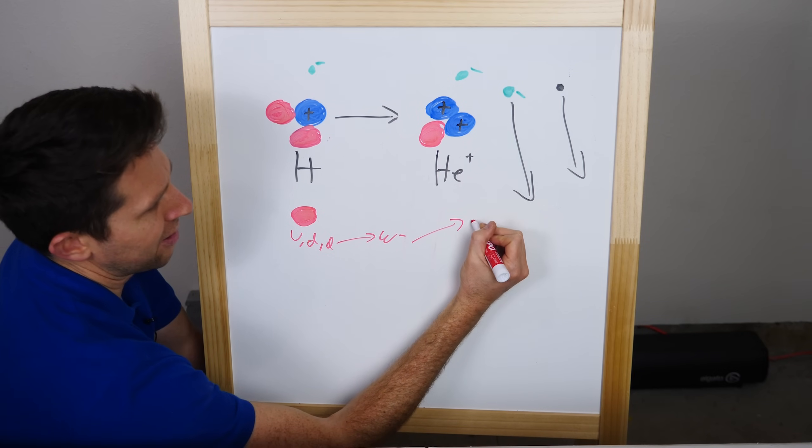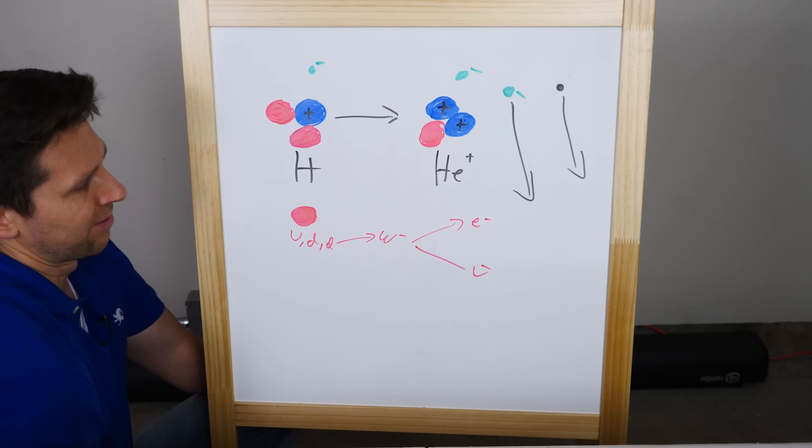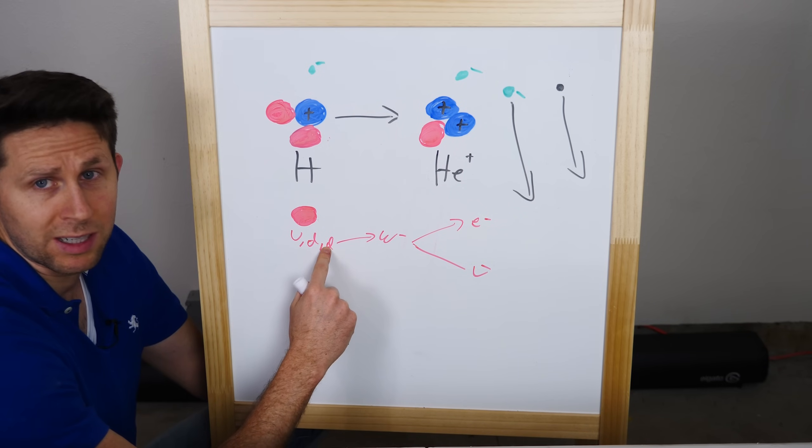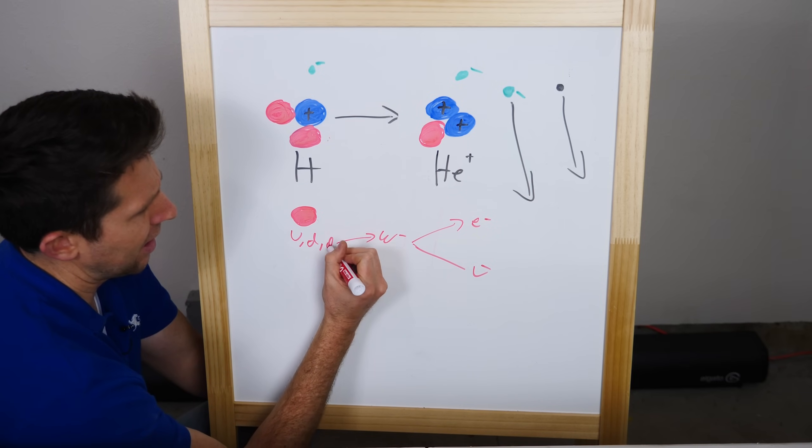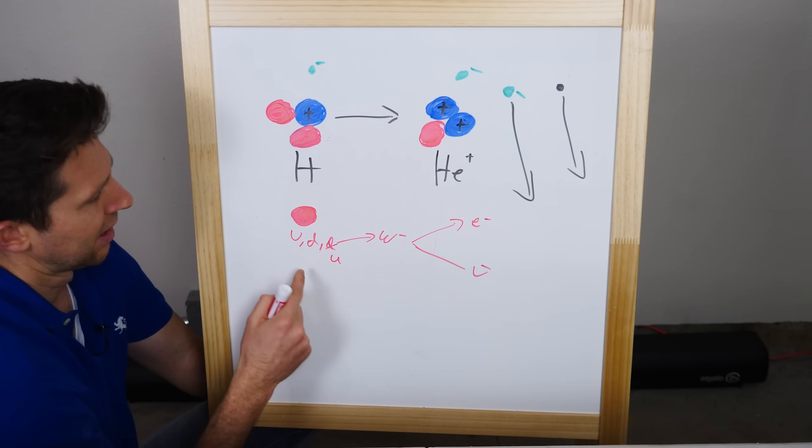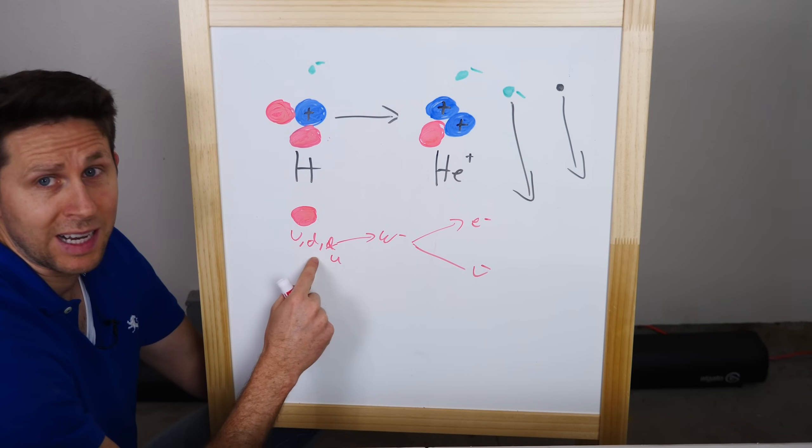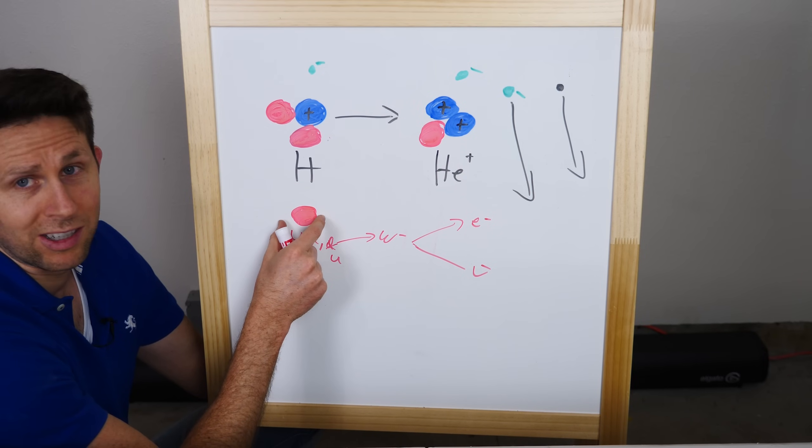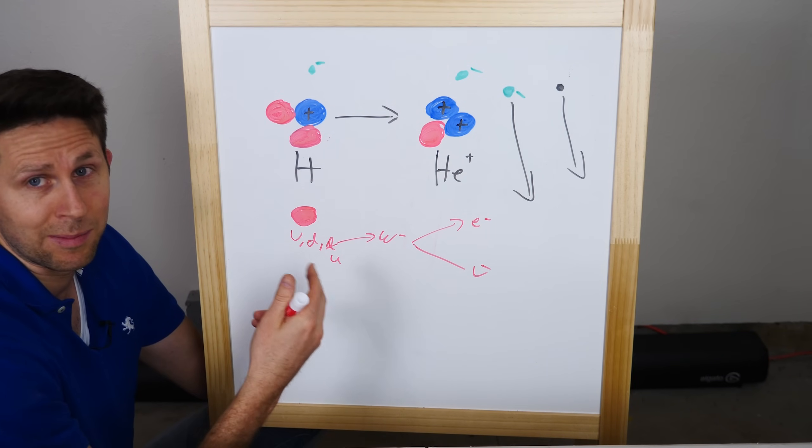And what happens is when it emits this boson, this boson can split into an electron and an anti-neutrino. And when this down quark emits this W boson, what happens is it switches to an up quark. So now it's an up, down, up. And now because it's an up, down, up quark, it's no longer a neutron, it's a proton because protons are made of up, down, up quarks.